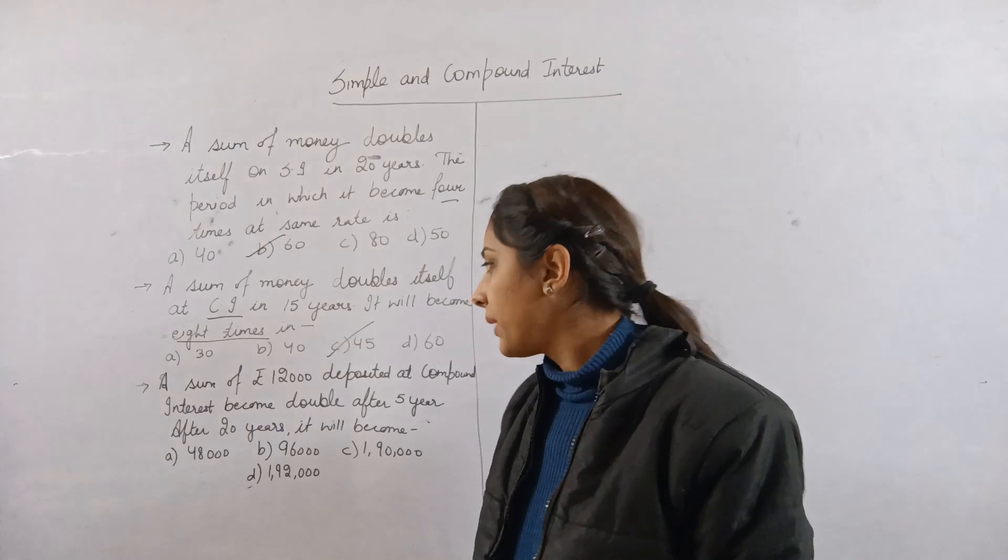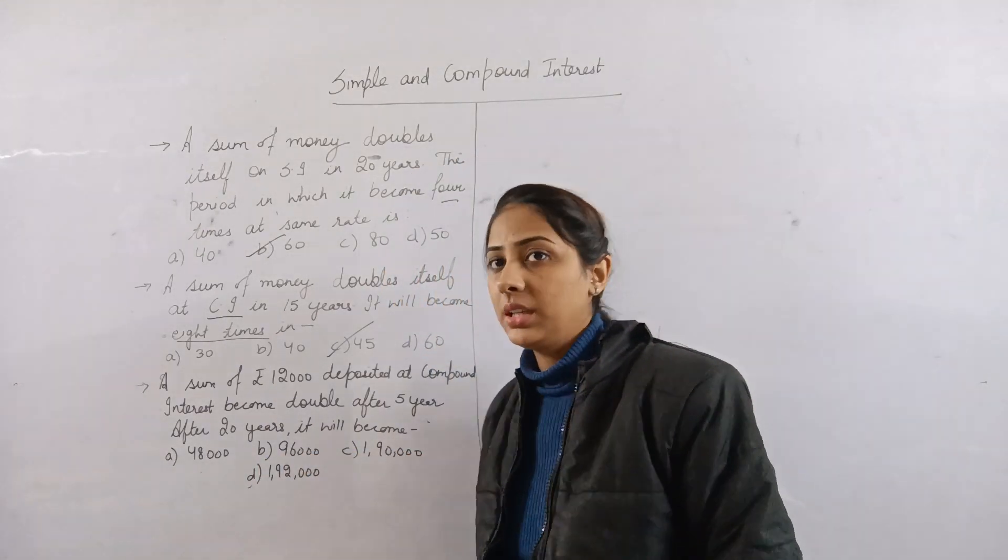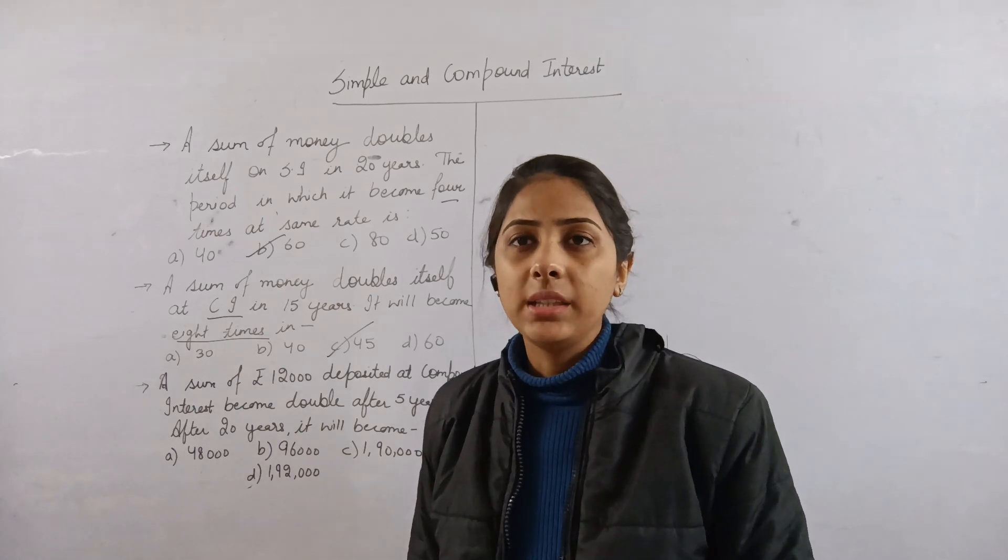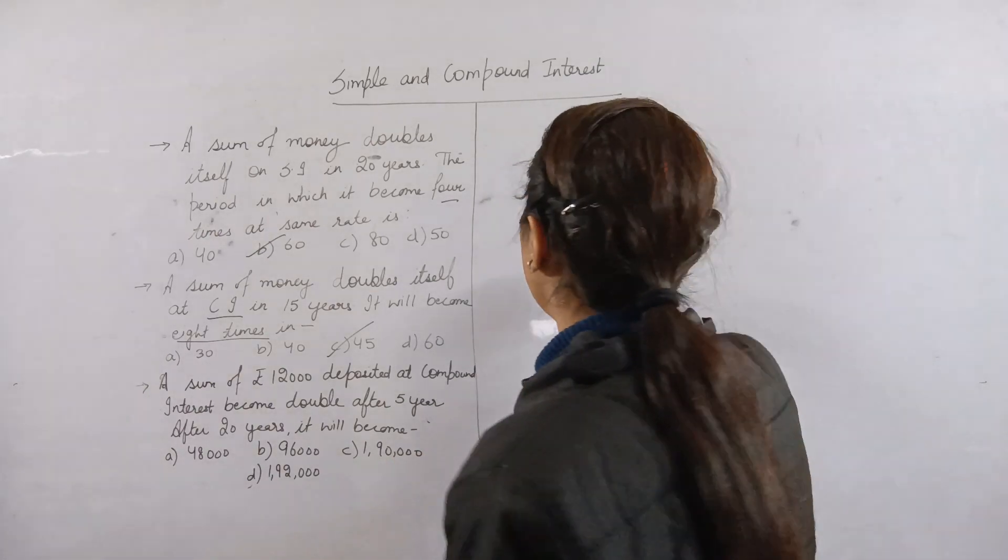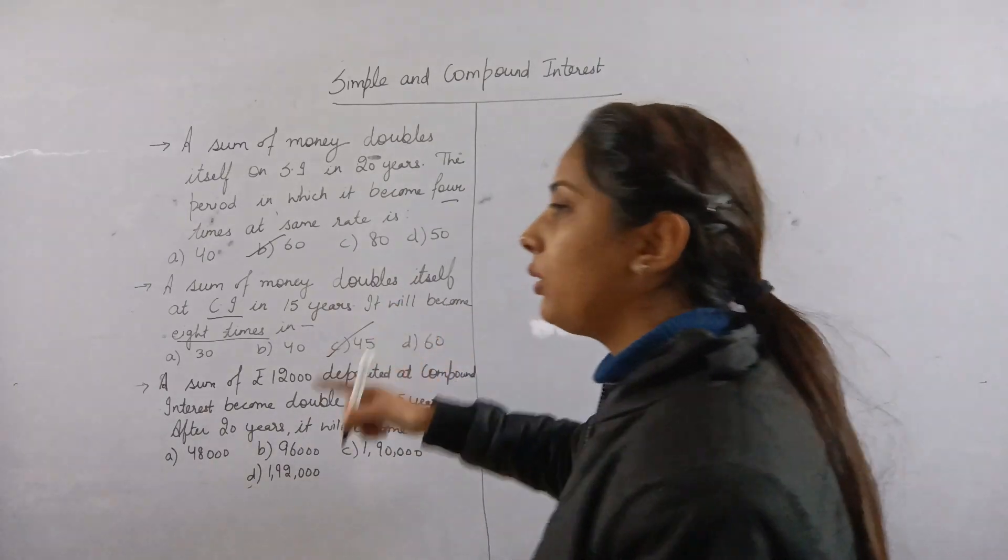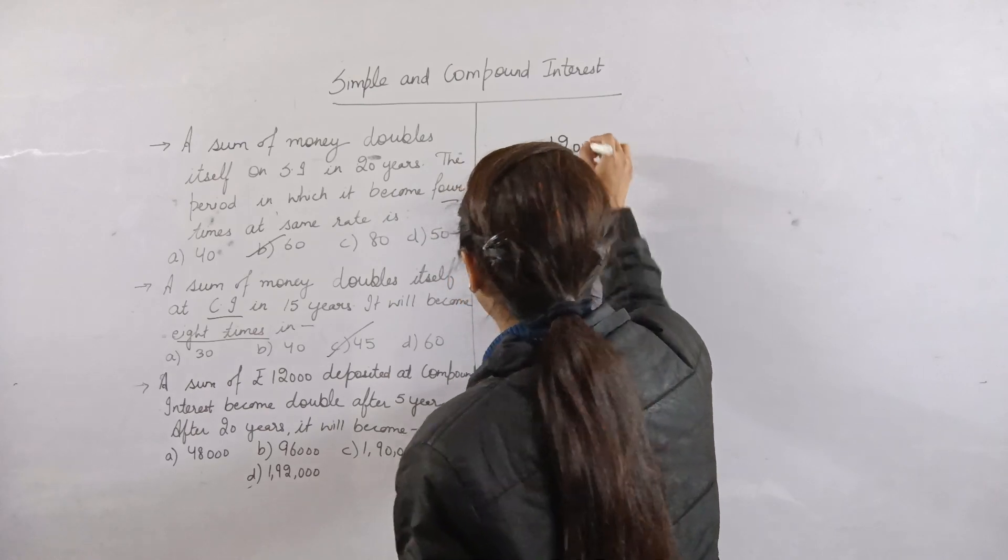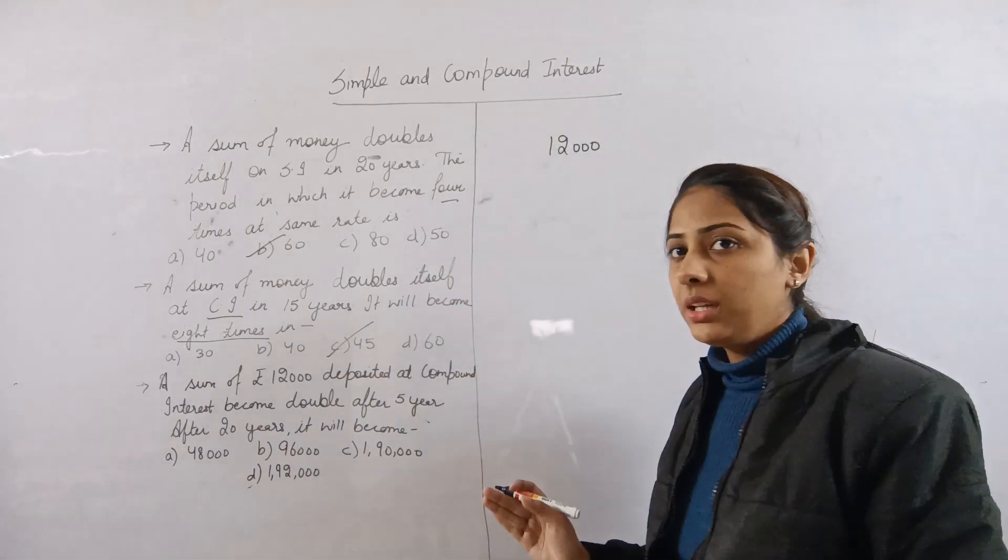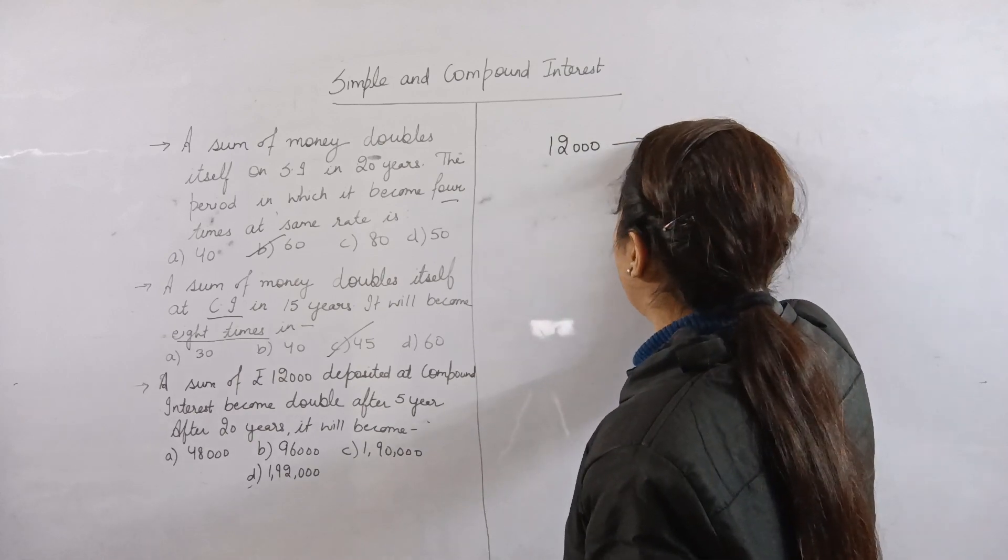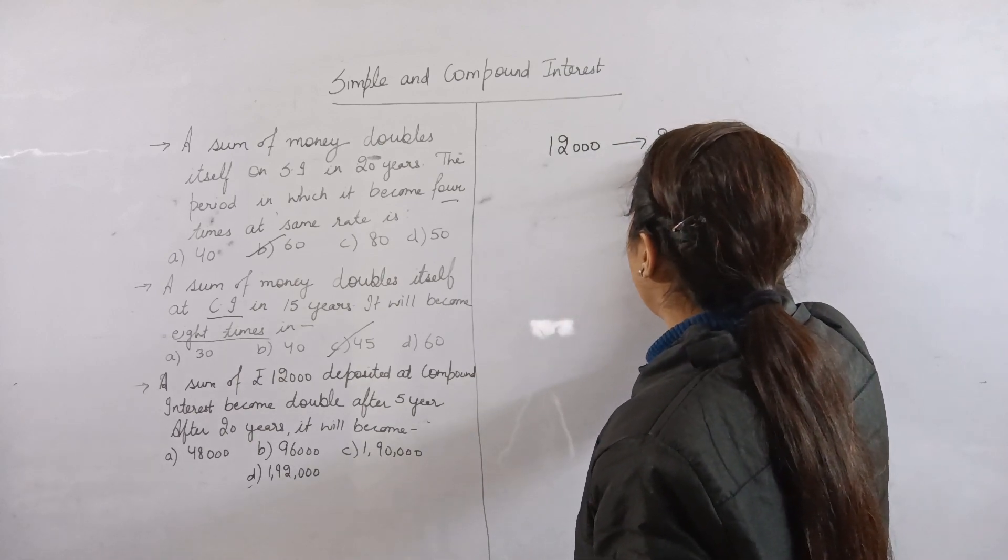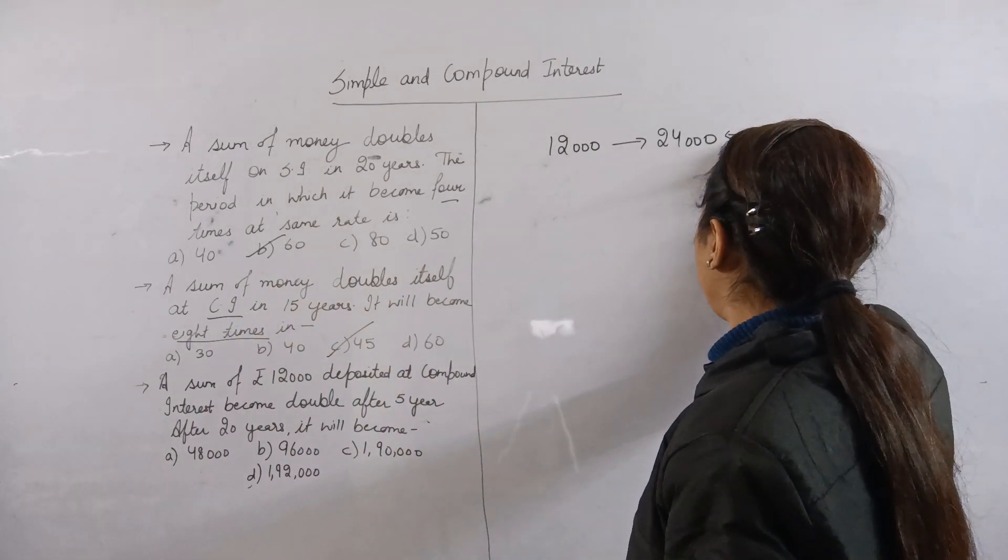Then after 20 years, it will become what amount? If you have 12,000, my money doubles every 5 years. This means 12,000 becomes 24,000 within 5 years. Within how much time? Every 5 years.